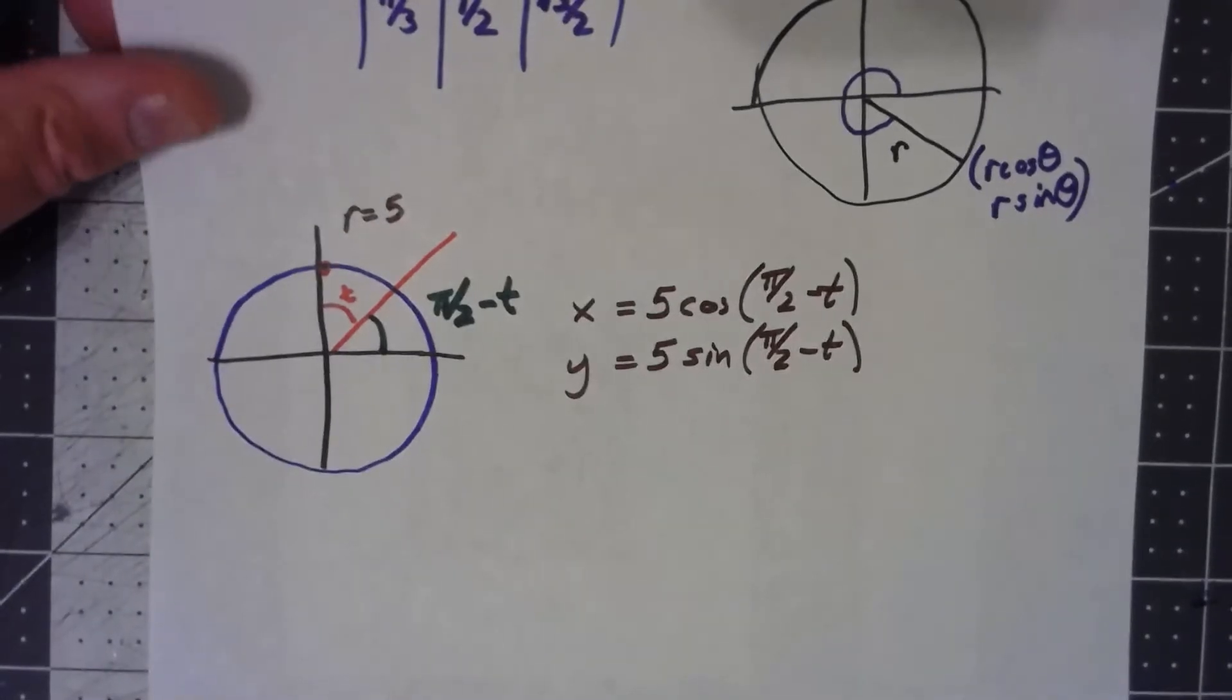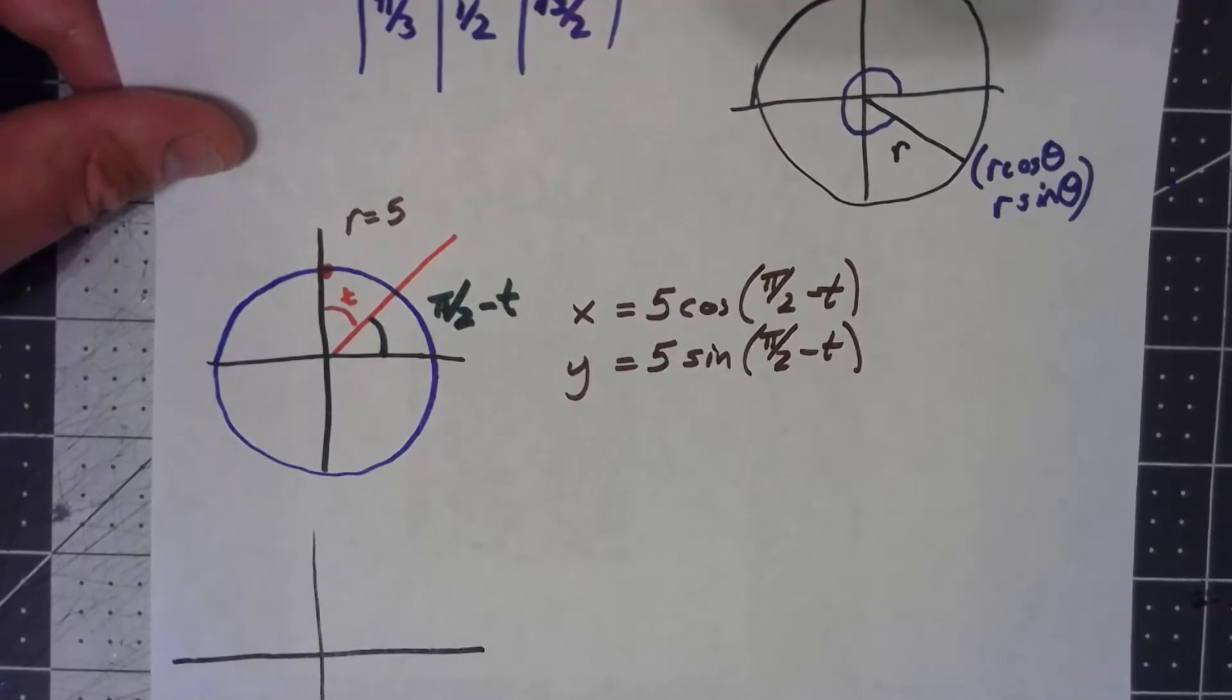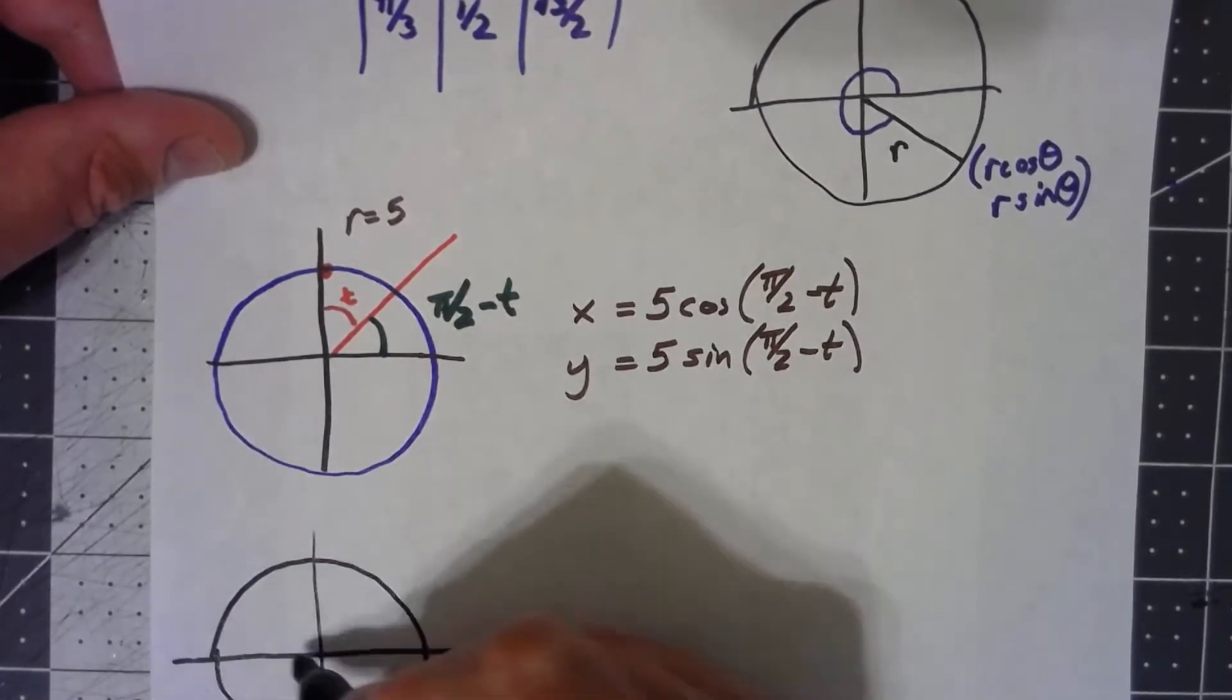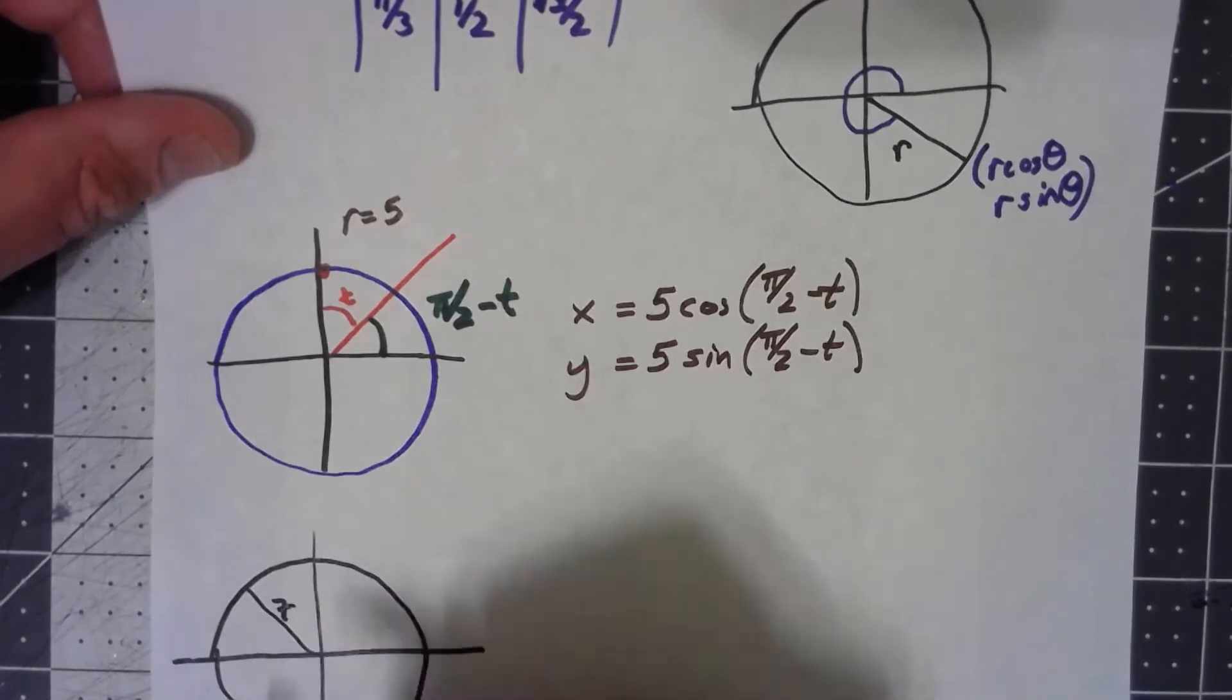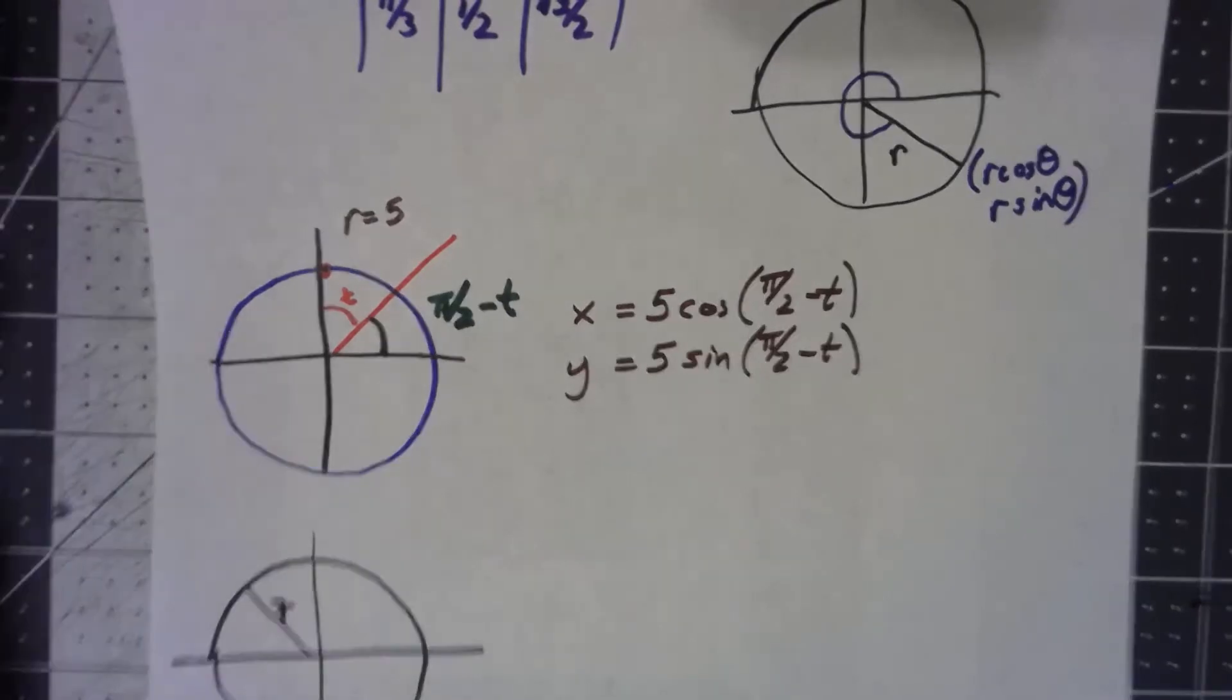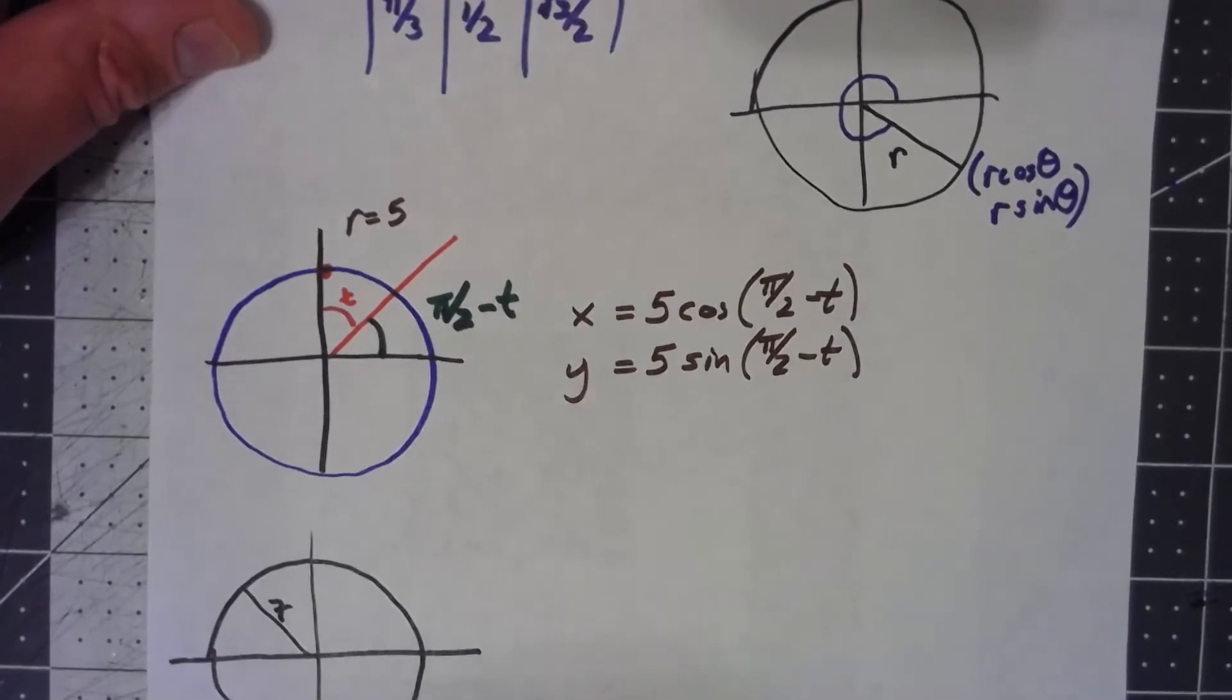Okay, let's try another one. Let's say I have a circle centered at the origin. Let's make the radius 7. And let's go ahead and parameterize it.